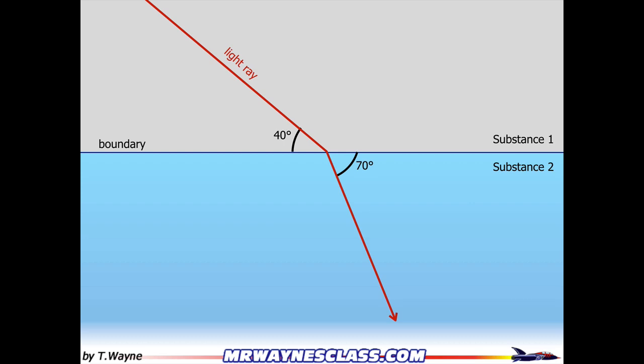Now in optics, we don't talk about these two angles. Instead, we talk about the angle with the normal line. When two lines come together and intersect at a 90 degree angle, they're said to be normal to each other.